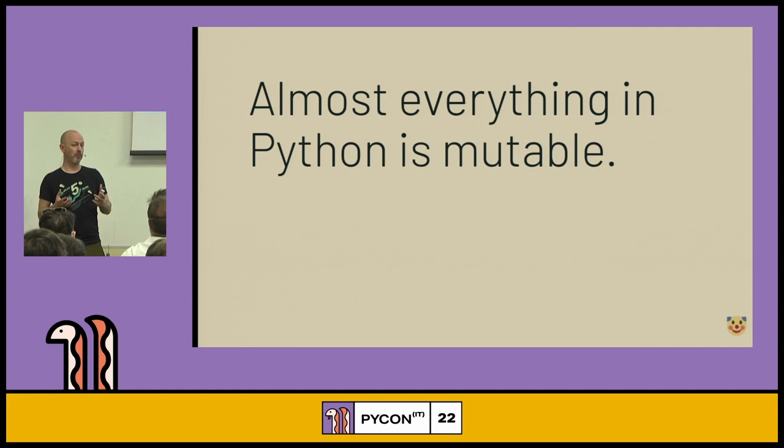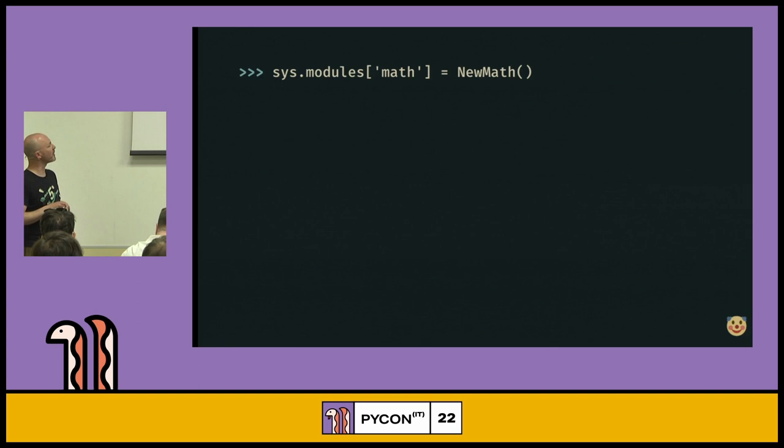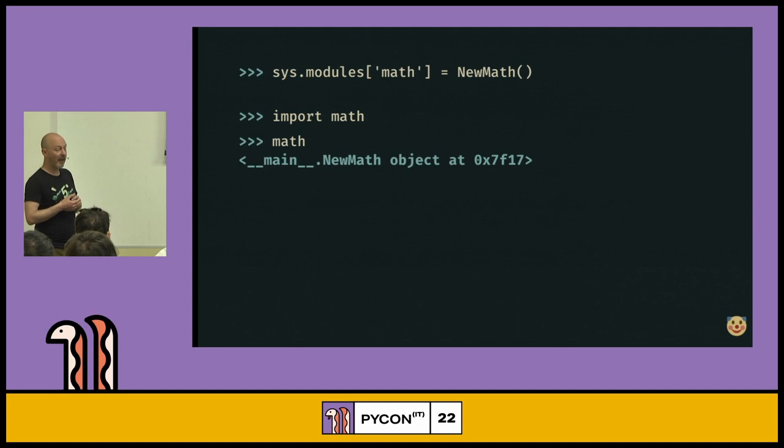So almost everything in Python is mutable. This is why I like writing stupid Python code in Python. And because it's mutable, you can change it. So let's manually modify sys.modules and pretend that the code that we've imported is actually this object that we've just instantiated. So now I'm sticking in my class instead of a module. And now if I import Math, it's not going to do anything because it's already got something called Math in the sys.modules. It's just going to return the new Math object that I put in there. Python doesn't care. This is how duck typing works. And I know we all love duck typing.